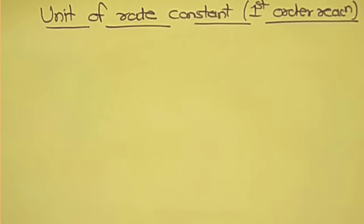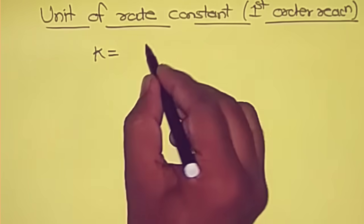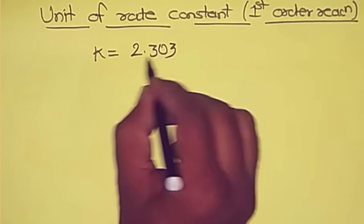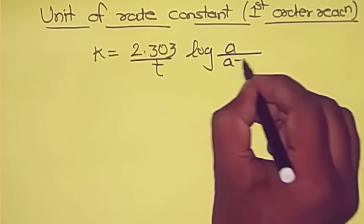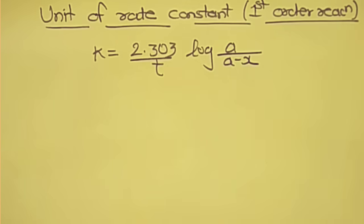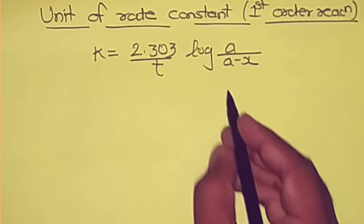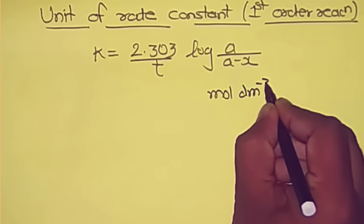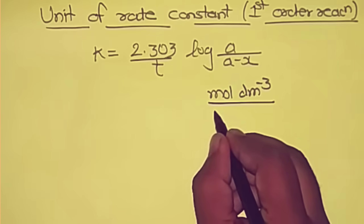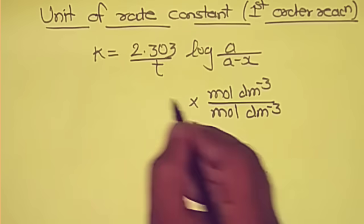Unit of rate constant for first order reaction. First I'll write the integrated rate equation for first order reaction: k equals to 2.303 upon t, log of a upon a minus x. Here, a is the initial concentration of reactant, and a minus x is the concentration of reactant after time t. Both are concentrations of reactant, so their unit will be in terms of moles per dm cube.